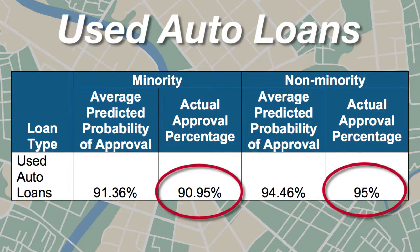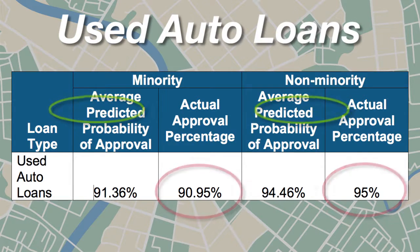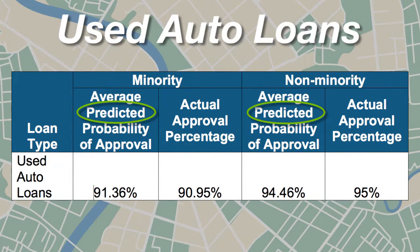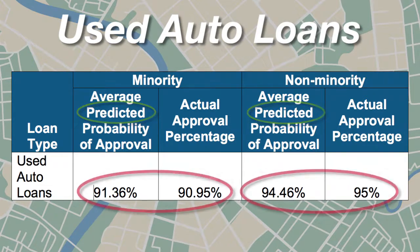Here we see a four percentage point difference in approval percentages between minority and non-minority applicants. However, when we predict the approval percentage of minority and non-minority applicants with all other factors being equal or close to equal, we see that the predicted and actual approval rates are fairly close for minority applicants, with less than one percentage point difference for both groups.